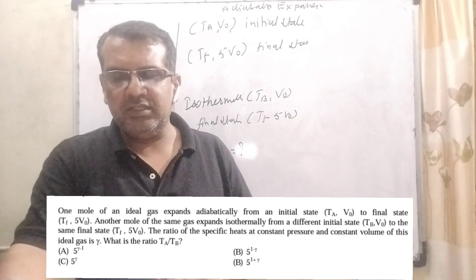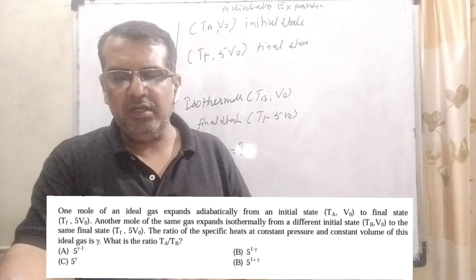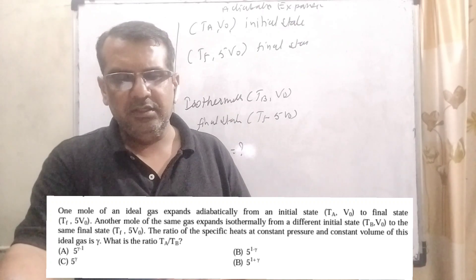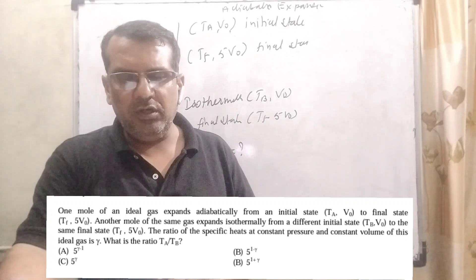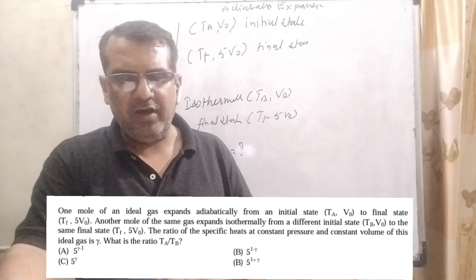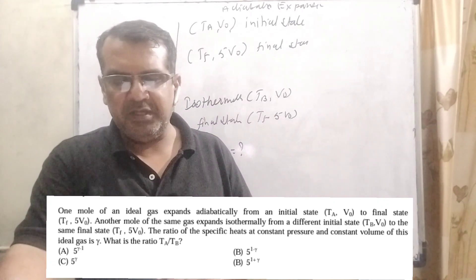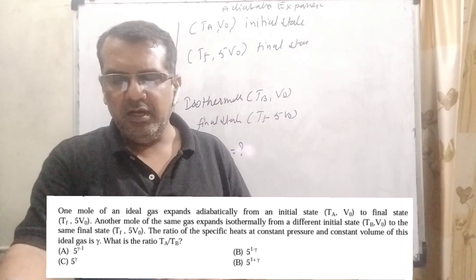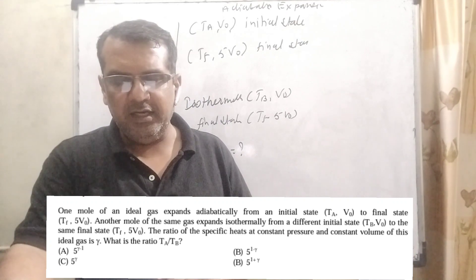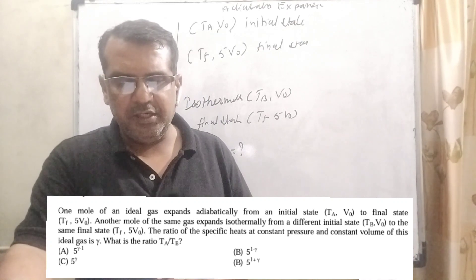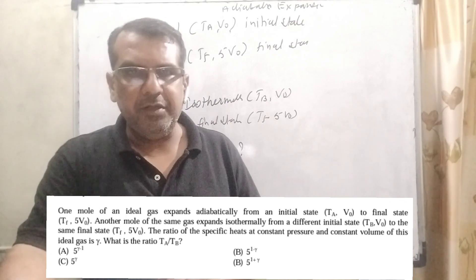Another mole of the same gas expands isothermally from a different initial state (TB, V0) to the same final state (TF, 5V0). The ratio of the specific heats at constant pressure and constant volume of the ideal gas is gamma. What is the ratio TA/TB?